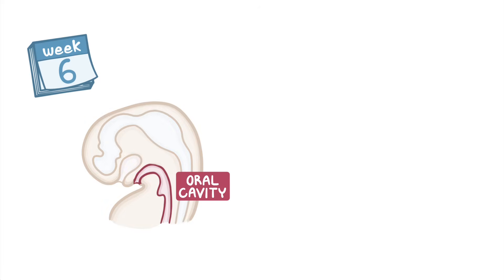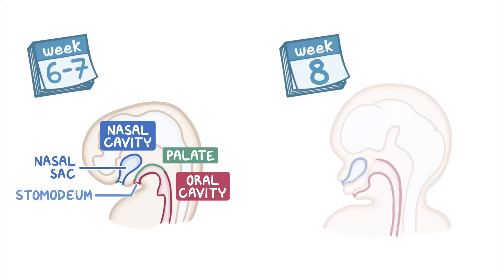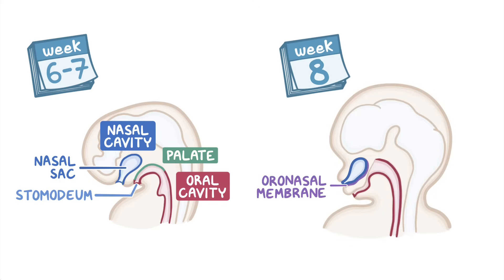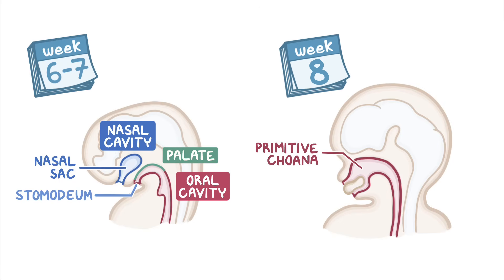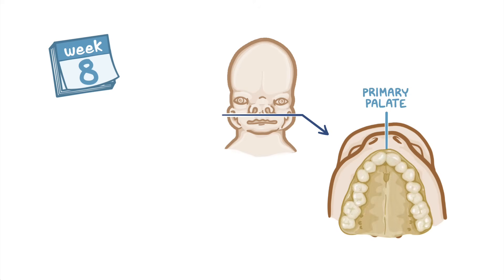As the external face is developing, there are some structures developing on the inside as well — most importantly, the oral cavity, nasal cavity, and the palate. During weeks 6 and 7, the two nasal pits burrow deeper and backwards just above the stomodeum, forming the nasal sacs behind the intermaxillary segment. By week 8, the oronasal membrane at the base of the nasal sac disintegrates, forming a primitive choana, which connects the nasal and oral cavities. Alongside this, a triangular plate of tissue — the primary palate — grows from the back of the intermaxillary segment and extends until it reaches below the incisive foramen of the skull.